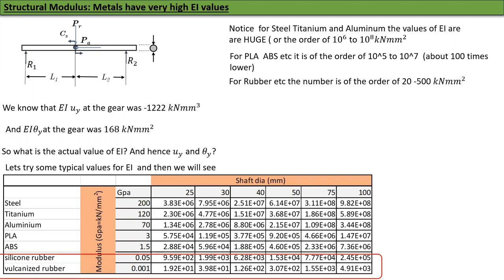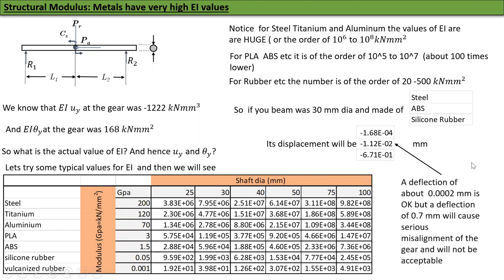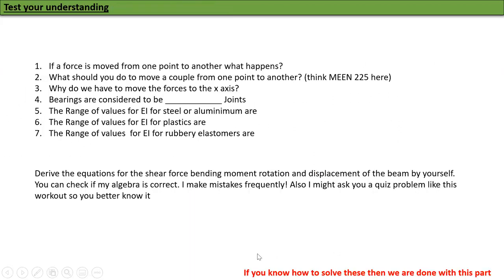If your beam is 30 millimeters dia and is made of steel, its displacement will be 1.68 times 10 to the minus 4 at the gear. 1.12 times 10 to the minus 2 if it's made of plastic, and 6 times 10 to the minus 1 if the shaft is made of rubber. A deflection of about 0.0002 mm is quite okay. But a deflection of 0.7 millimeters for a rubber shaft will cause serious misalignment and give you extensive damage.